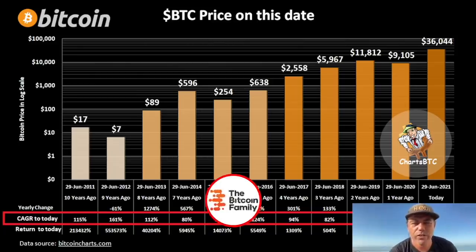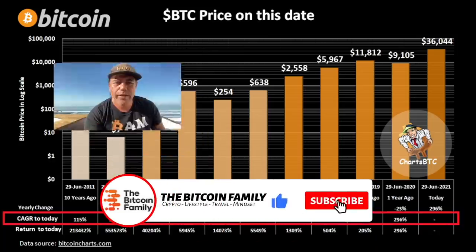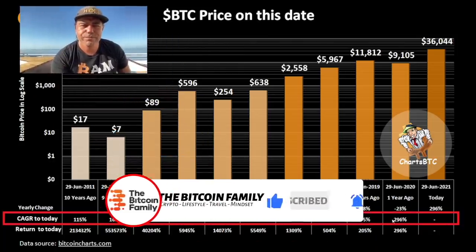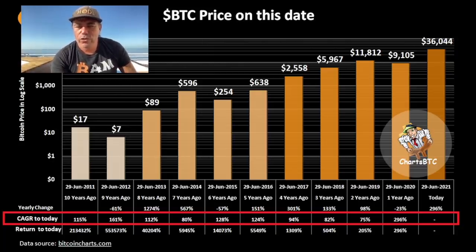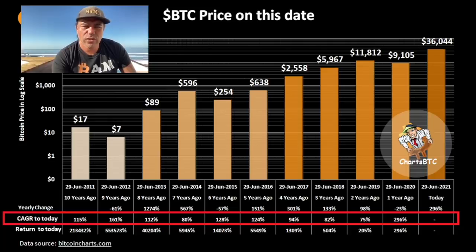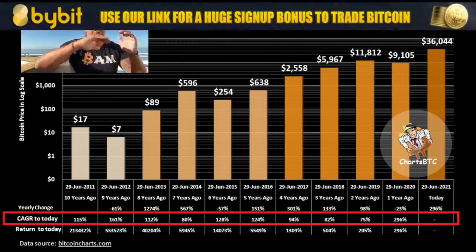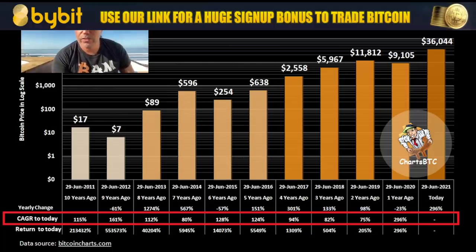This is the last part of the video. This is the Bitcoin price on certain dates: the 29th of June 2019 we were at 11k, the 29th of June 2020 we were at 9k, the 29th of June 2021 we were at 36k. Can you see the growth? At the CAGR — the averaged-out growth curve — in total we have now 200% growth every year. That's a huge growth in Bitcoin. And if you compare that with other assets, you can see that Bitcoin is outperforming all of those assets.